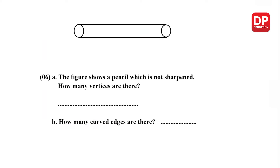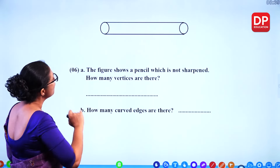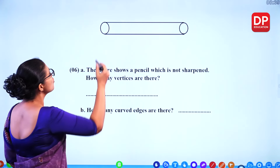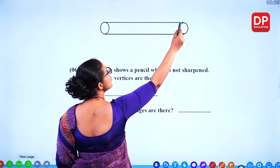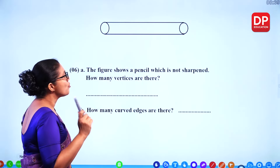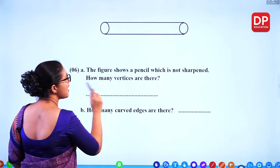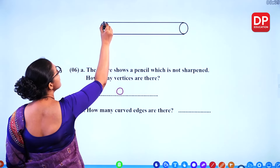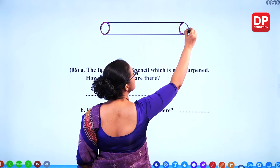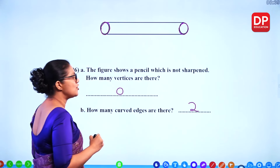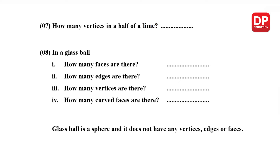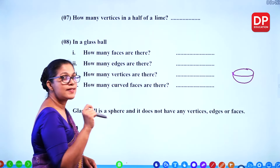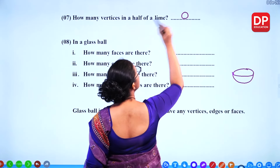The figure shows a pencil which is not sharpened. It has curved edges and a curved surface, so there are zero vertices and two curved edges. For half a lime, similarly there are zero vertices. In a glass ball — a spherical shape — there are zero plain faces but one curved face, and no edges or vertices at all.